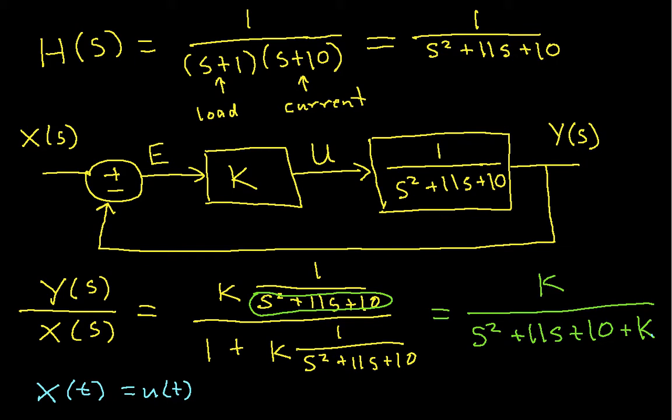So that means that the output of the system will be K over S, that's the 1 over S corresponding to the unit step function, times S squared plus 11S plus 10 plus K. So this is the output, and we now want to look at the time function that this represents and determine, again, things like steady state error and so forth.